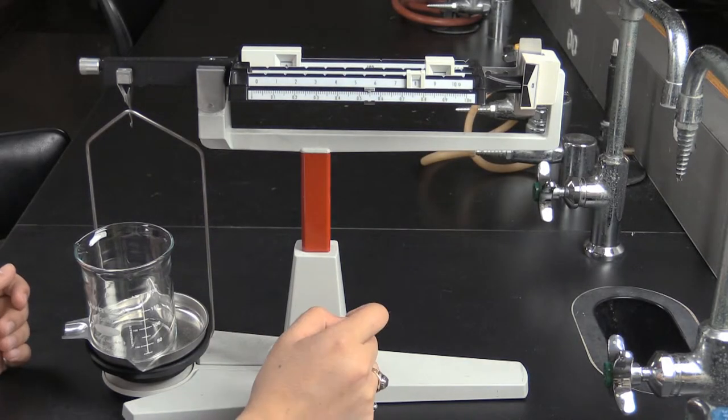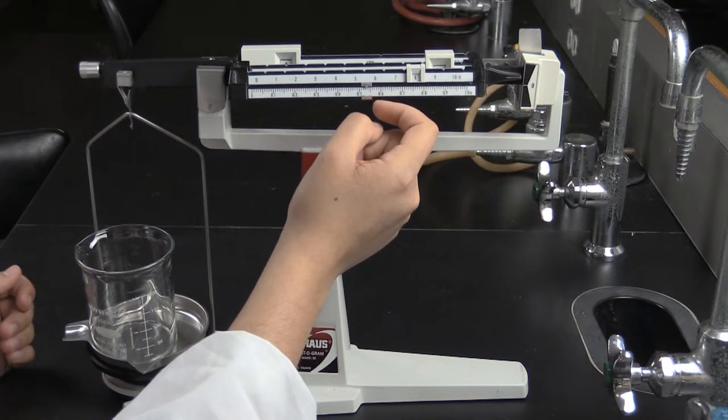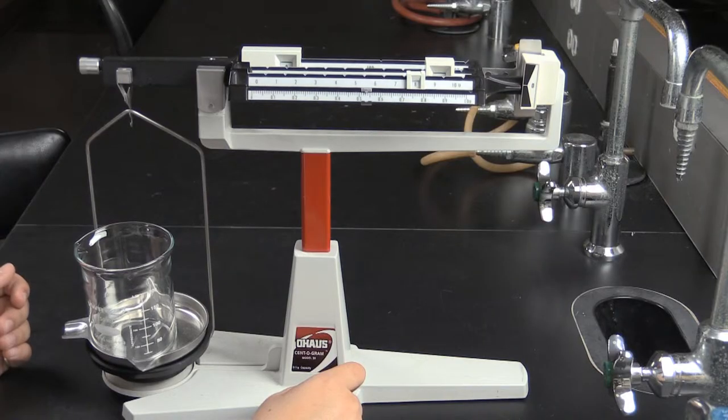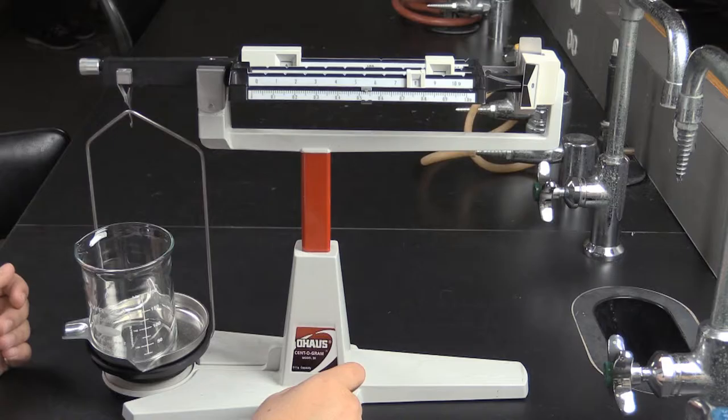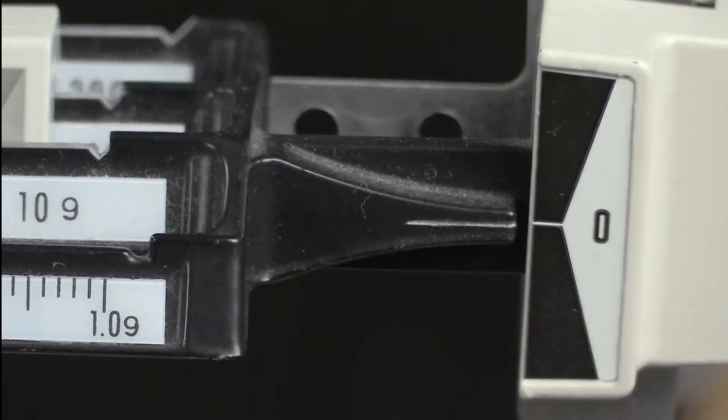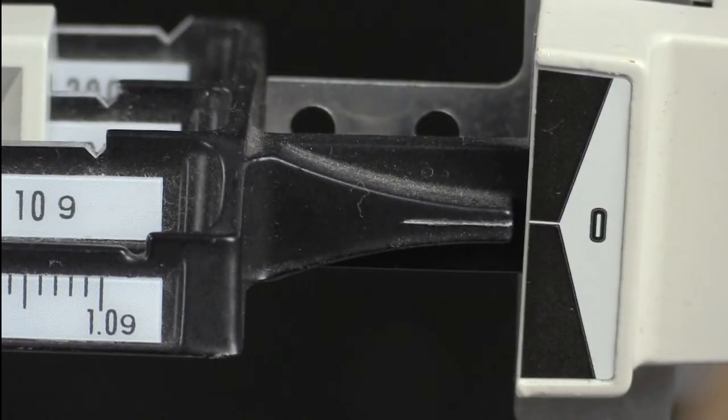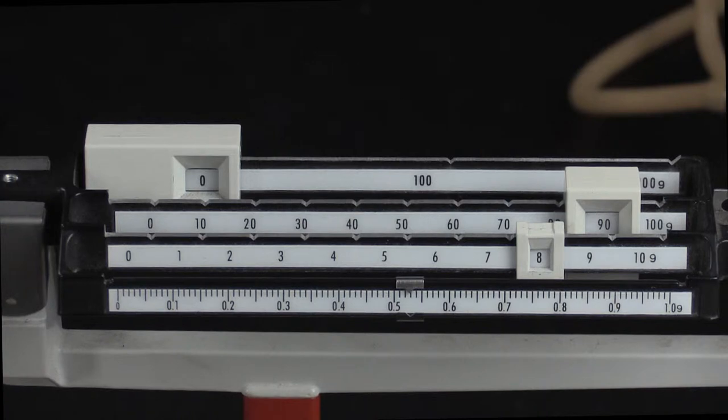The closest slider is the only exception to this, as it has no notches. Slide the smallest slider back and forth until you reestablish balance and the lines line up. Once you have established balance, you are ready to read the balance.